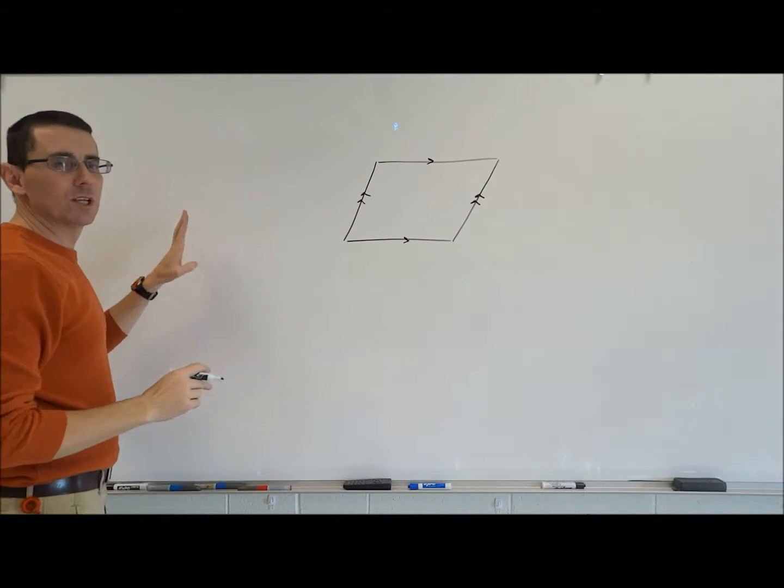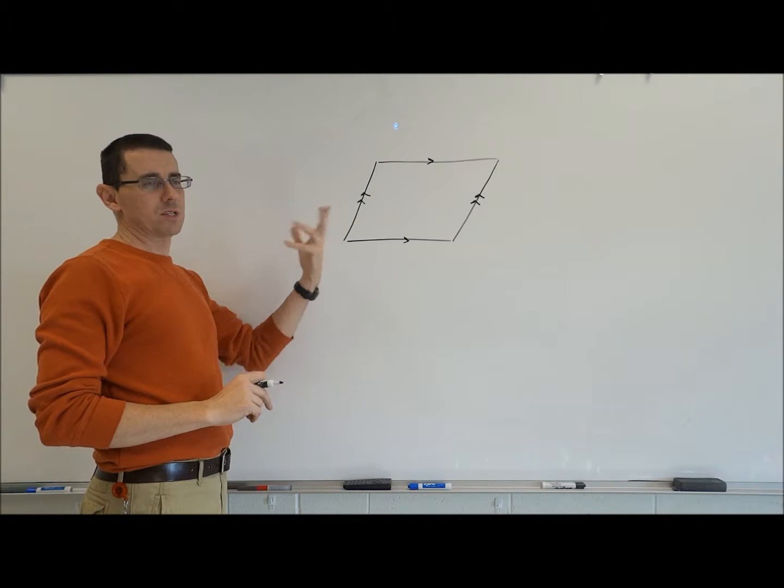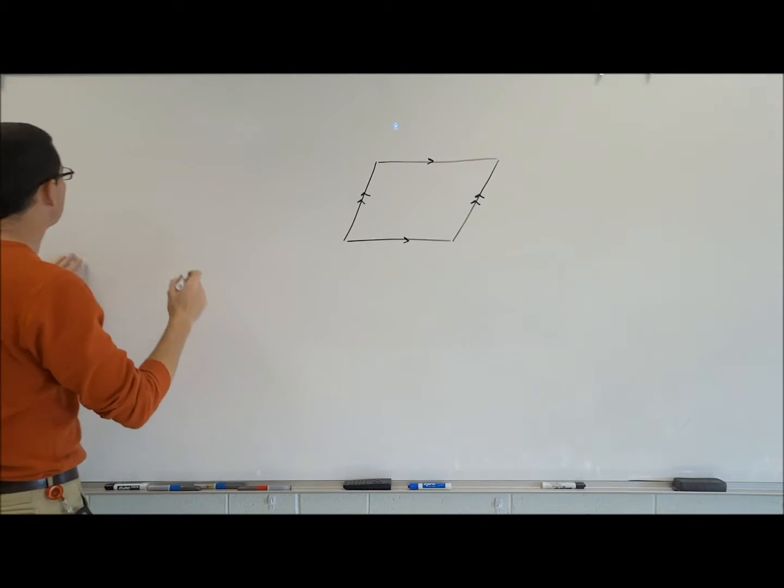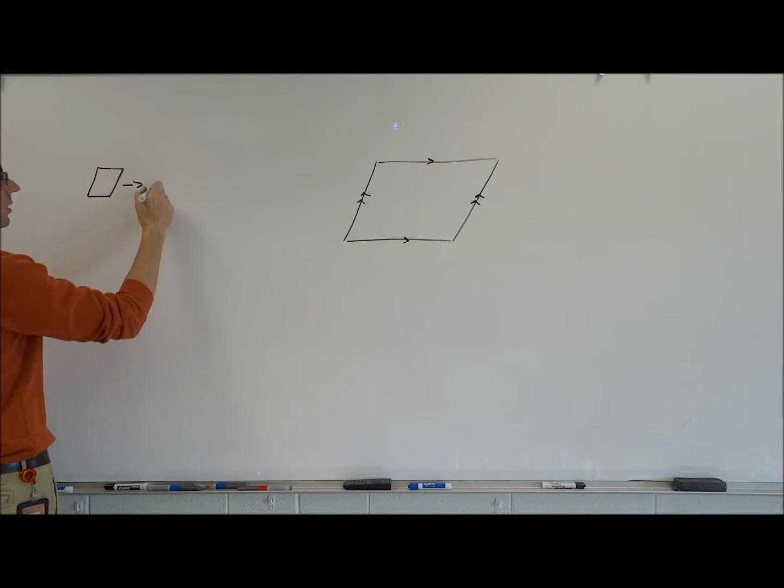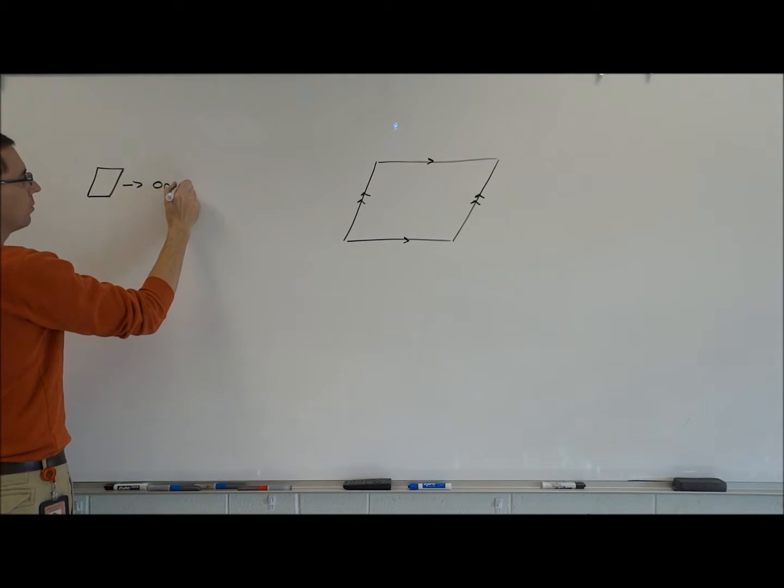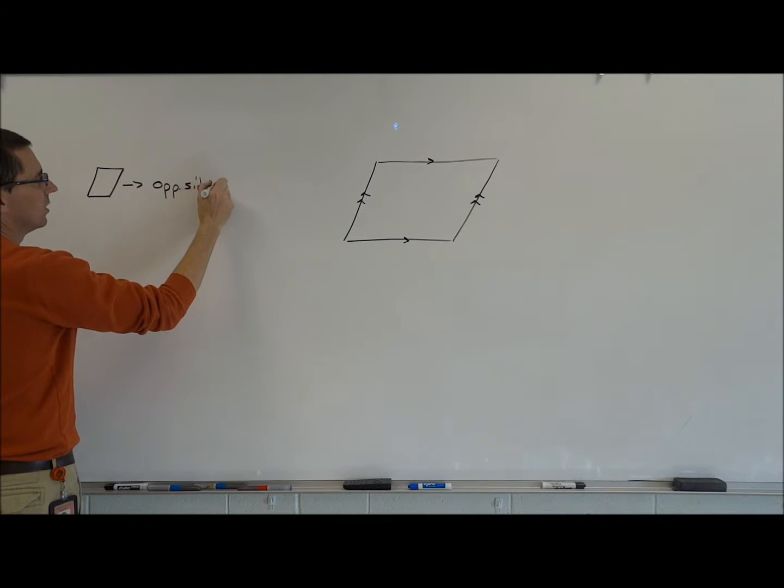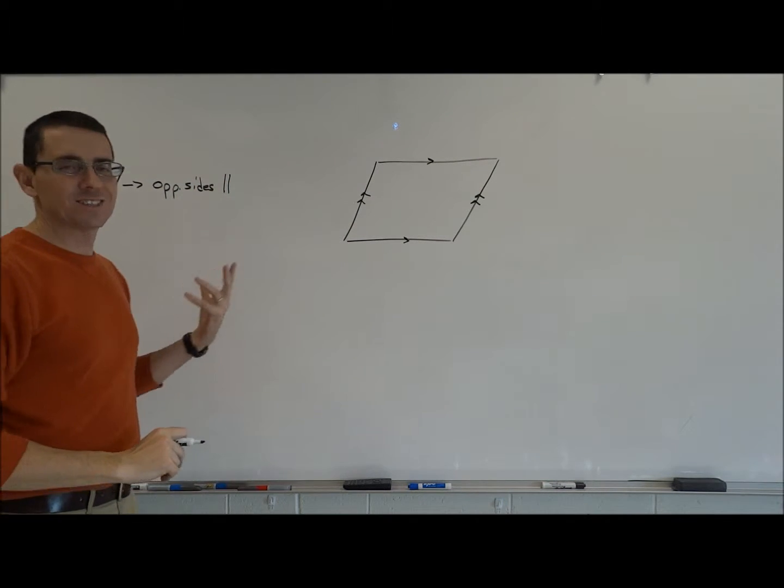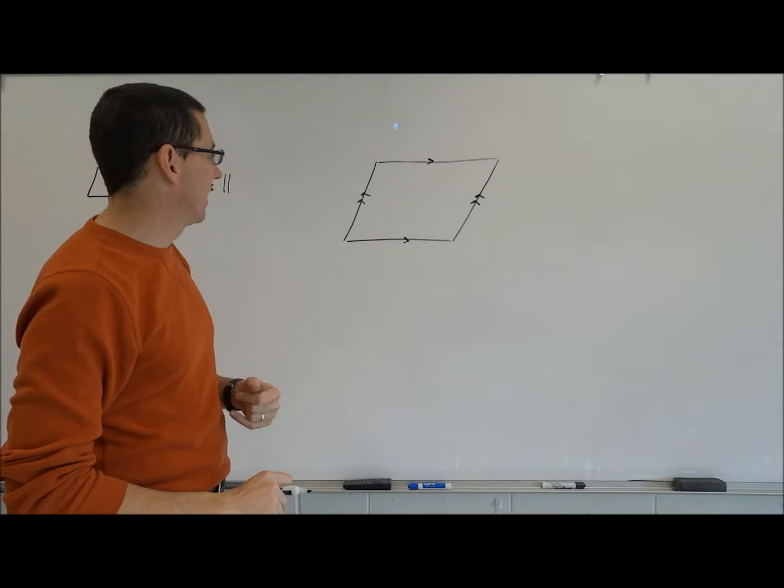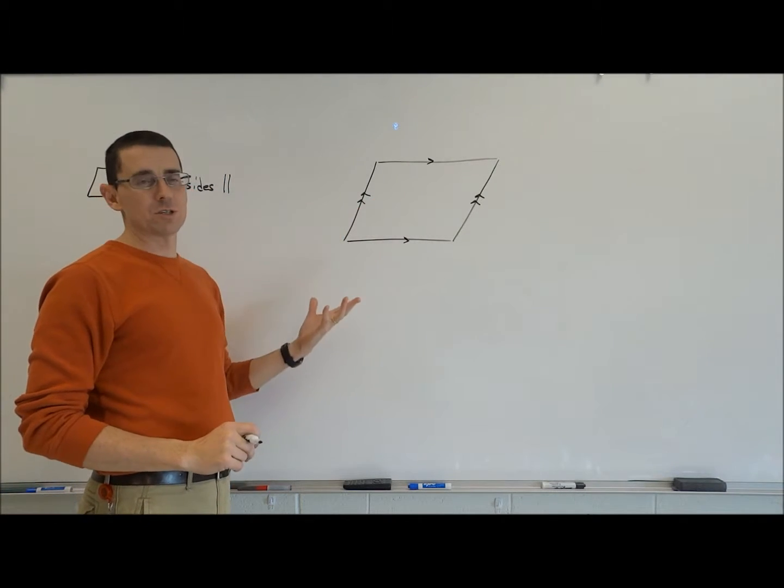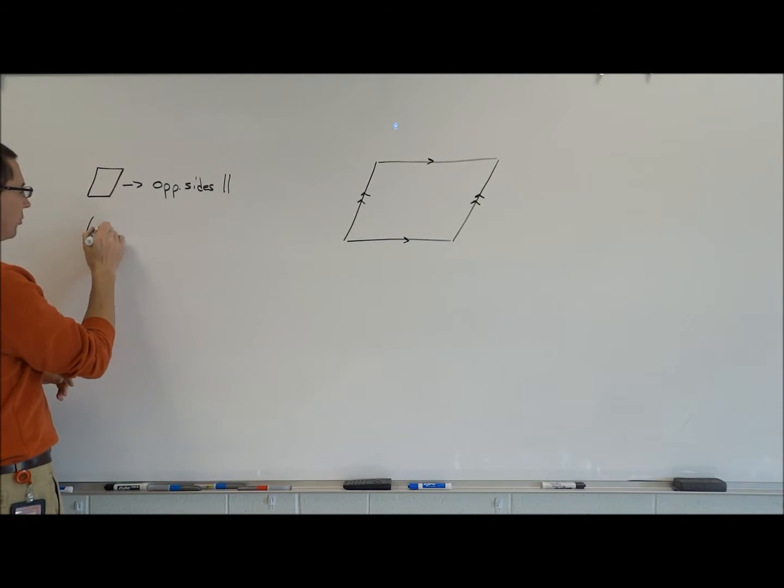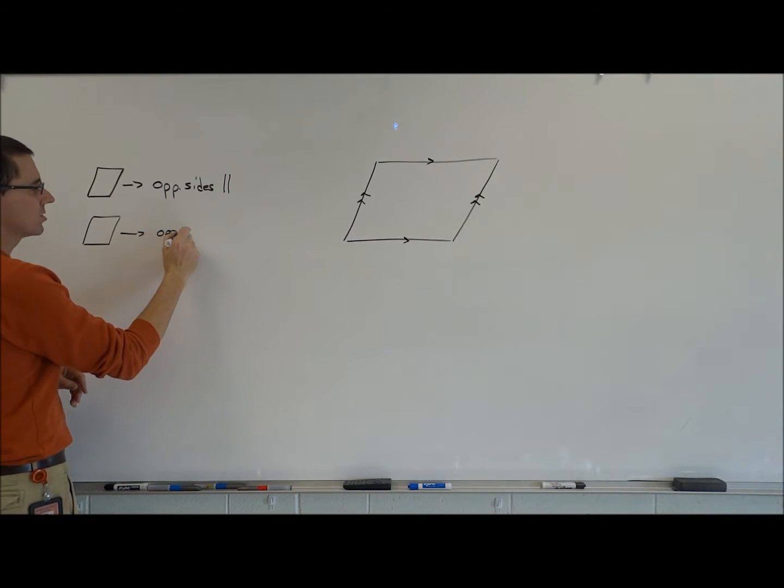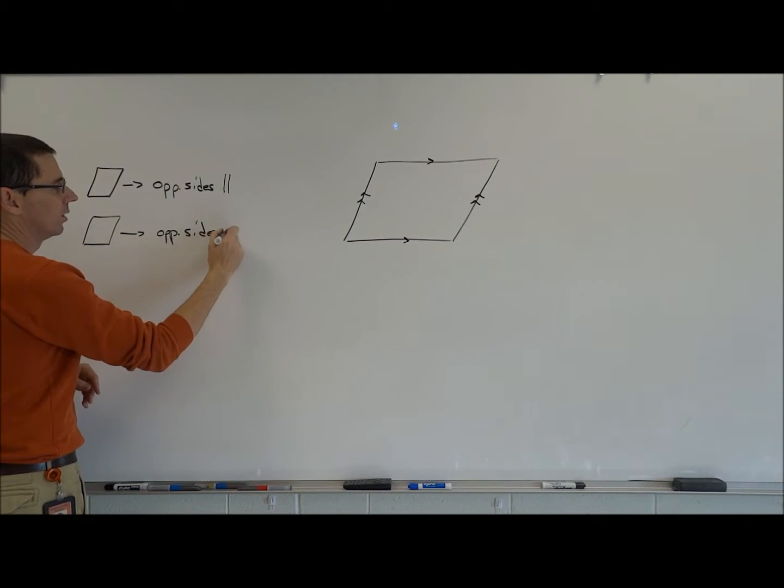Now, we're going to list these. When we talk about these properties, that's a basic definition. We're going to list these off to the side over here. And we're just going to put parallelogram implies opposite sides parallel. That's a definition. Now, the next one is a theorem, which talks about, well, if the opposite sides are parallel, then I'm going to be able to prove that a parallelogram implies the opposite sides are also congruent.